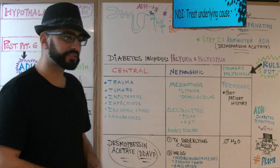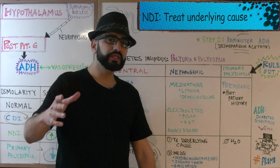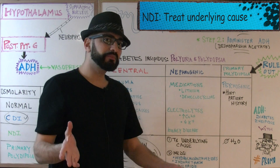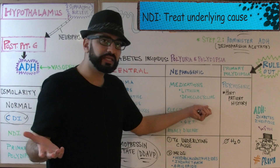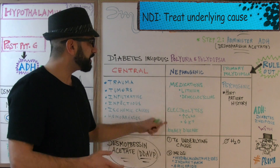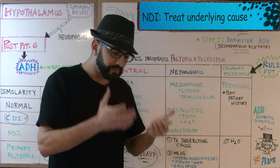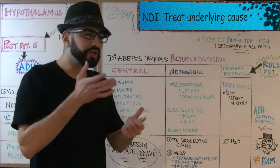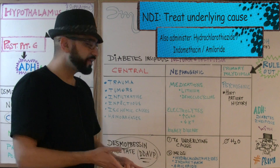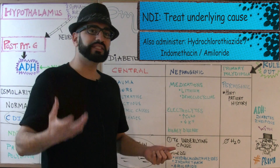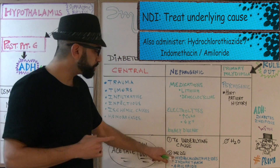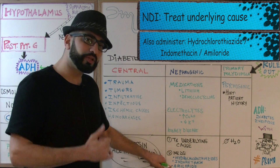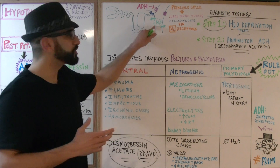For nephrogenic diabetes insipidus, treat the underlying cause first. If medications are causing the issue, see if you can stop them — maybe the patient doesn't need the lithium or demeclocycline anymore. If electrolytes are the cause, correct the imbalance: bring calcium levels down in hypercalcemia, raise potassium in hypokalemia. If it's kidney disease, investigate and do your best. Additionally, three medications can help the kidneys respond better to ADH: hydrochlorothiazide, indomethacin, and amiloride. Add one of these to the treatment plan.